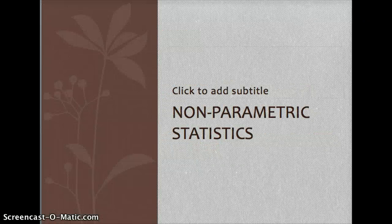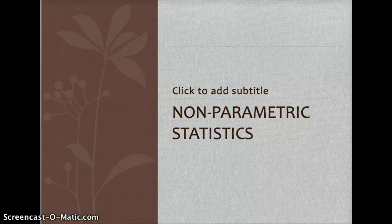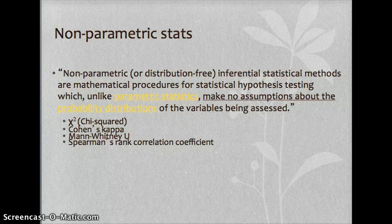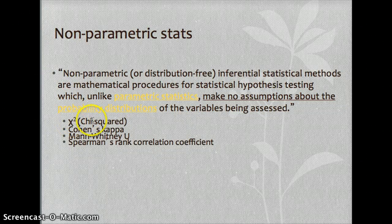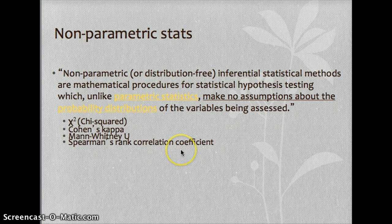Those were parametric statistics, which assume that the data from these groups are normally distributed. Non-parametric statistics are distribution-free — they are mathematical procedures for statistical hypothesis testing that make no assumptions about the probability distributions of the variables being assessed. We're not assuming our data falls on a normal bell curve. The type of data here is typically categorical. Types include chi-squared, Cohen's kappa, Mann-Whitney U, and Spearman's rank correlation coefficient.